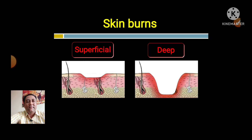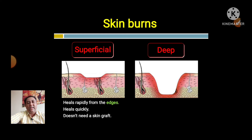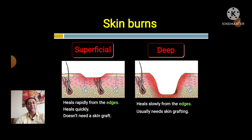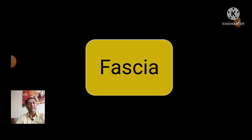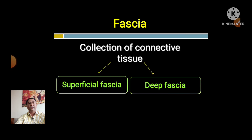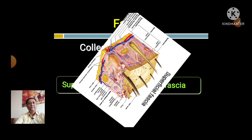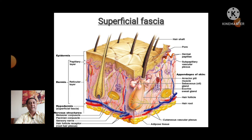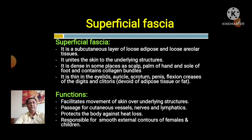Superficial burns heal rapidly from the edges and do not usually need skin grafting, while deep burns heal slowly from the edges and usually need skin grafting. Now, regarding fascia: fascia is a collection of connective tissue, and there are two types — superficial fascia and deep fascia.